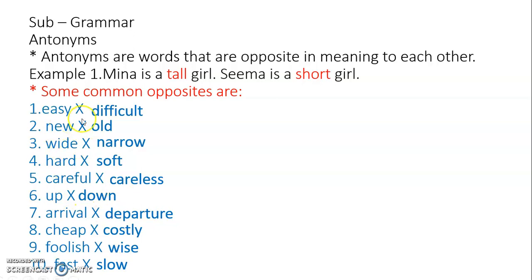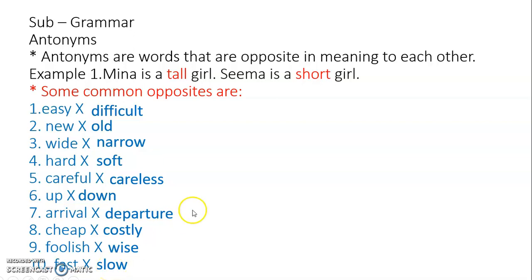So once again let us read these opposites. Easy — difficult. New — old. Wide — narrow. Hard — soft. Careful — careless. Up — down. Arrival — departure. Cheap — costly. Foolish — wise. Fast — slow. Now, children, a very important thing in antonyms: when you write the opposites, this sign has to be there.